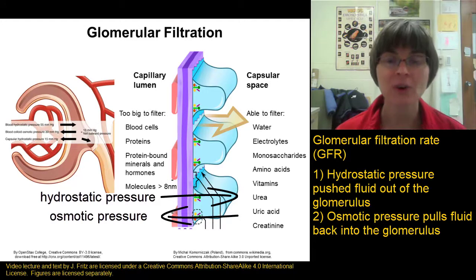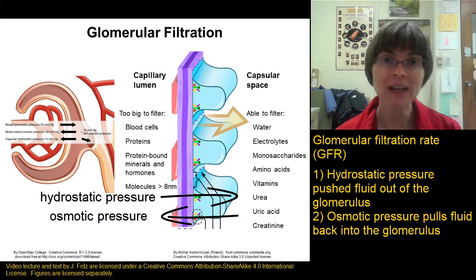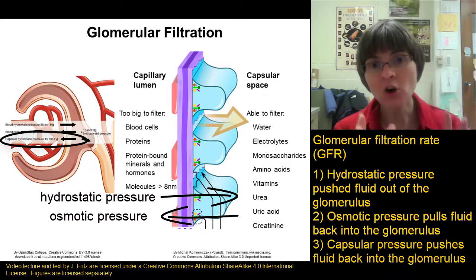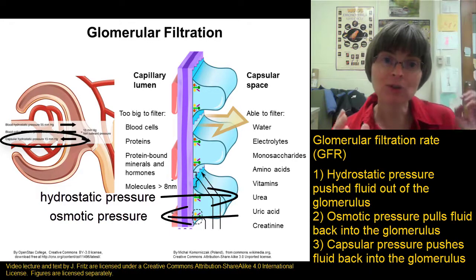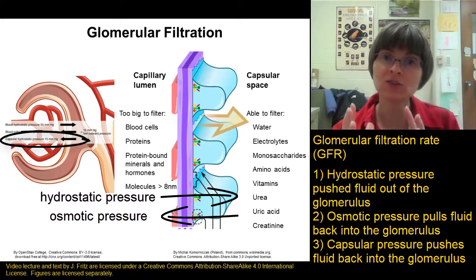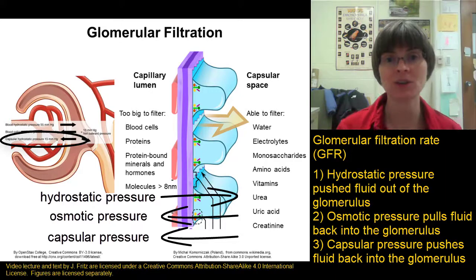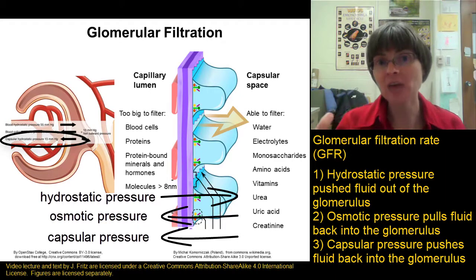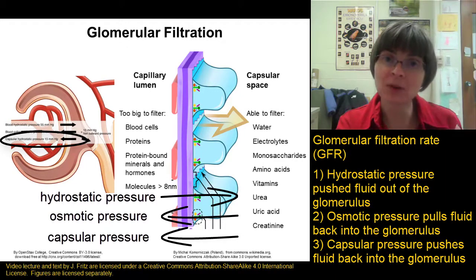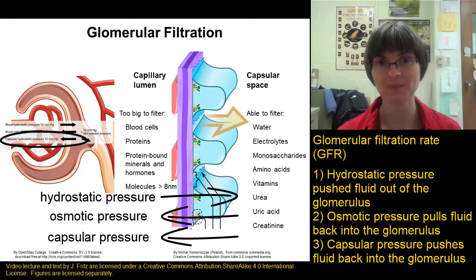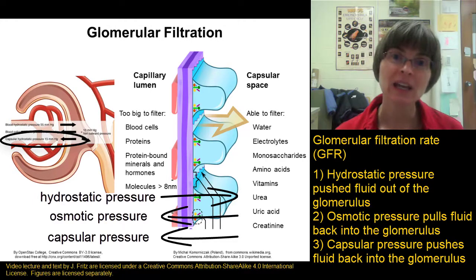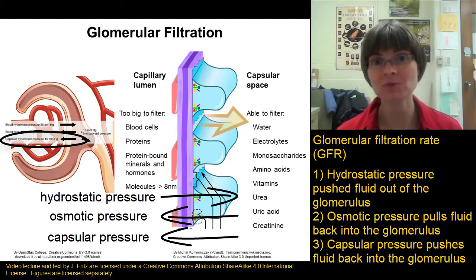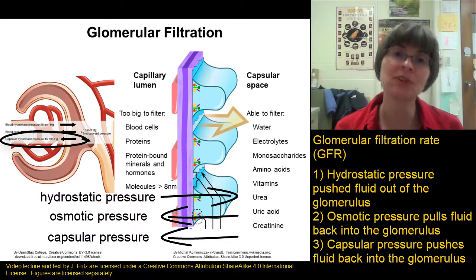The final force affecting the glomerular filtration rate is capsular pressure. There's only so much room in the glomerular capsule, and if we're forcing more and more fluid into the capsule, pressure builds up that pushes the fluid back into the glomerulus. The higher the capsular pressure, the more fluid is pushed back, and the lower the GFR will be. Usually capsular pressure isn't a big deal, but it can come into play when there's a lot of fluid being pushed in or if something is blocking flow through the nephron.